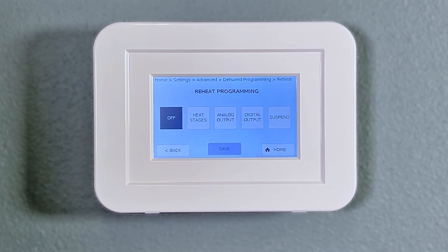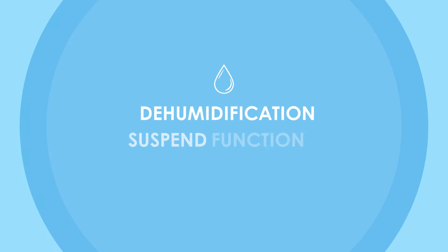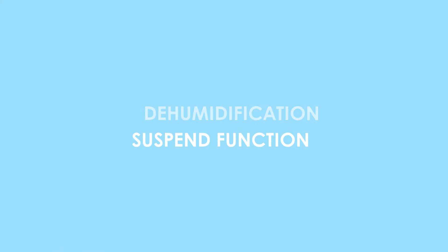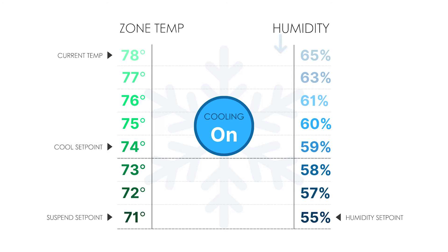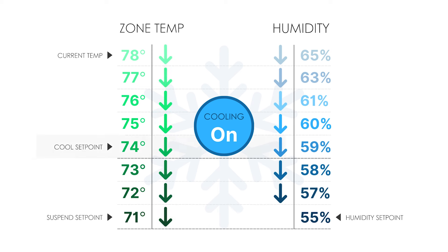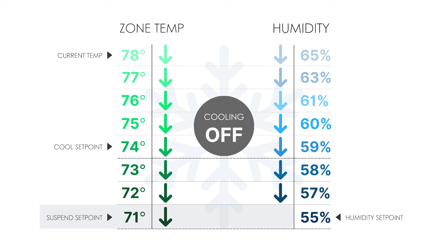If no reheat is used or simply not available, the Ubiquistat offers a suspend function. This allows the HVAC equipment to continue dehumidifying the space down toward the humidity set point, even if the zone temperature drops below the cooling set point. At this suspend set point, the dehumidification process will be suspended, turning the cooling off before the space gets uncomfortably cooled, even if the humidity set point has not been reached.